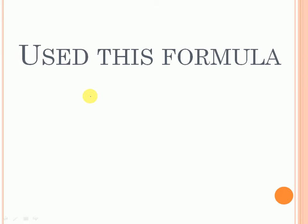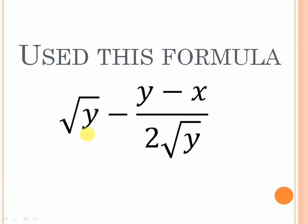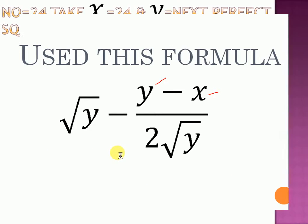Whether it is a perfect square or not, here is a formula. Where x is equal to the number which you are taking and y is equal to the nearest next perfect square. So if you put the number in this, you can easily find the square root.